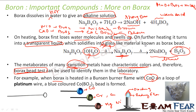Similarly, chromium will give chromium metaborate Cr(BO2)3, and copper will give copper metaborate. These compounds have different colors in the oxidizing flame. In the reducing flame, copper gives a bottle green color.